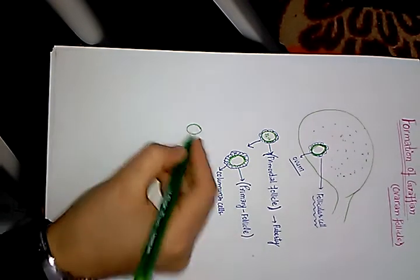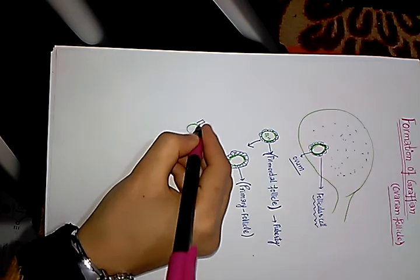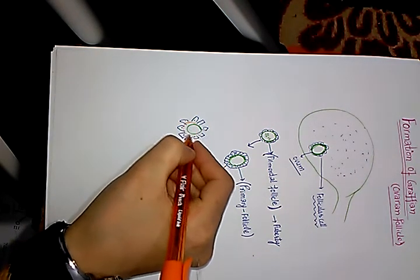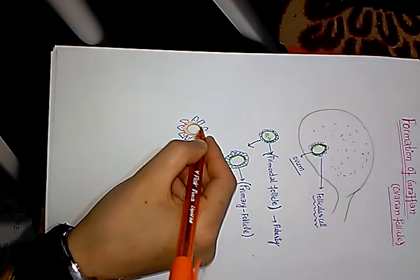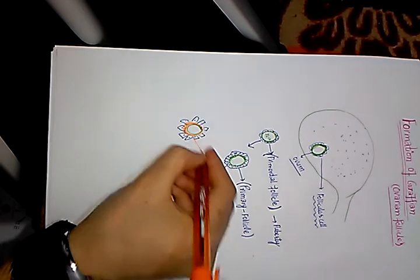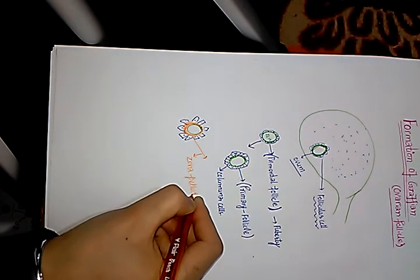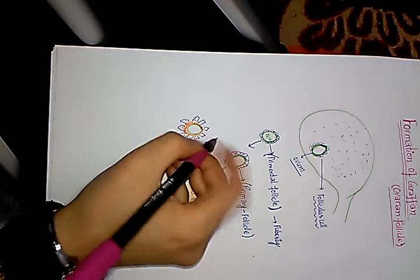Now what happens is that around the oocyte there are columnar cells, and a membrane gets developed between the oocyte and these columnar cells. This homogeneous membrane around the oocyte is called the zona pellucida. So what is zona pellucida? It is a homogeneous membrane which gets developed between the columnar cells and the oocyte.